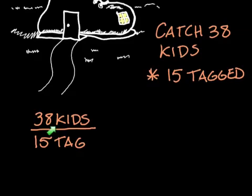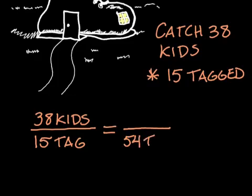The kids in the top tells us the total number of kids we were looking at, and tagged means 15 of them were tagged. Originally, though, we have no idea how many children there are total. There were 54 that were caught and tagged, so there are 54 with tags out of a total amount we don't know — so x kids.